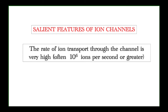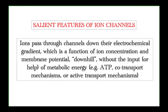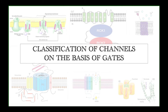The salient features of ion channels are: the rate of ion transport through the channel is very high — around 10 to the power 6 ions per second. Ions pass through the channels down their electrochemical gradient, from higher to lower concentration, requiring no energy. When moving against the gradient, energy from ATP is required. There may also be a specific means by which proteins or sugars move along with the ion across the membrane, called co-transport.